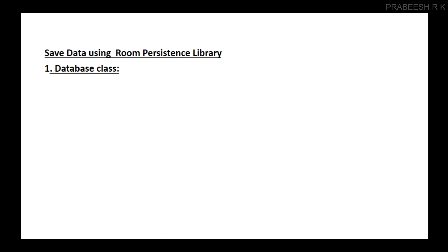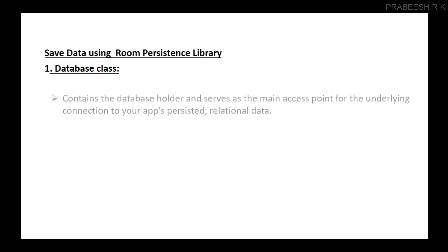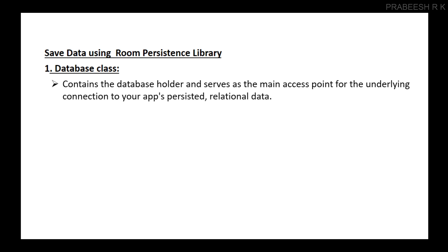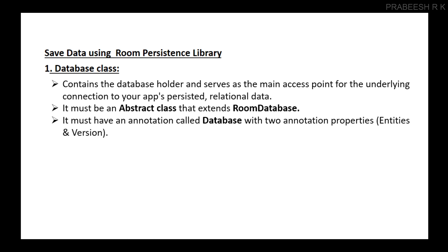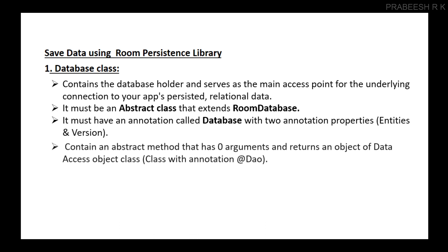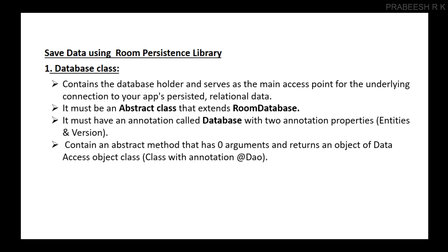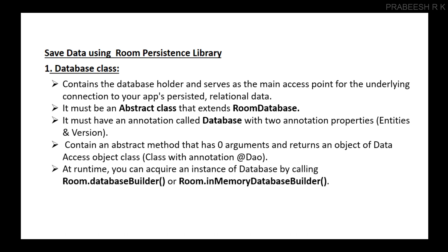The Data Access Object may be an abstract class or an interface that contains possible methods for database access. The Database class contains the database holder and serves as the main access point for the underlying connection to your app's persisted relational data. It must be an abstract class that extends RoomDatabase. It must have an annotation called @Database with two annotation properties: entities and version. The entities property represents tables in your database and version represents your database version.